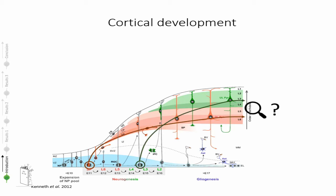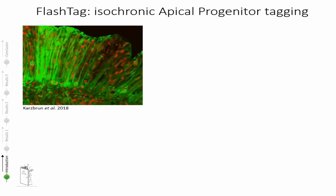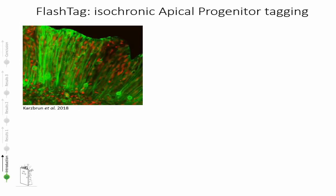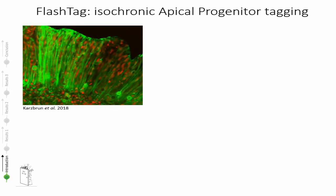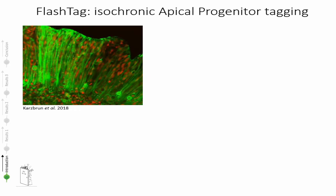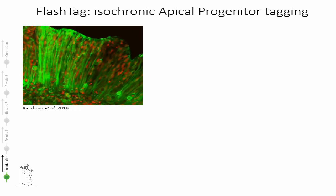The main goal of our project is to understand the precise contribution of each neurogenic day to the specific layers of the neocortex. To perform this task, we took advantage of a specific behavior of the developing nervous system called interkinetic nuclear migration. All of the progenitors that are in proximity of the ventricular surface are in fact continuously occupied in an up and down movement, which sees them approach the ventricular surface and then leave it.